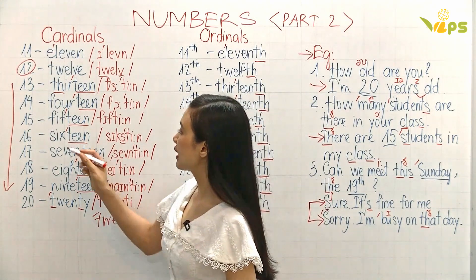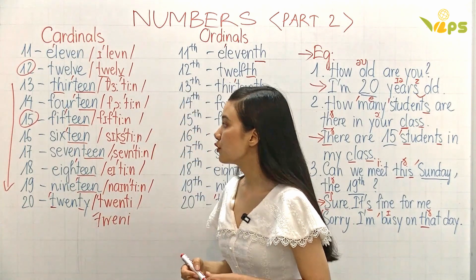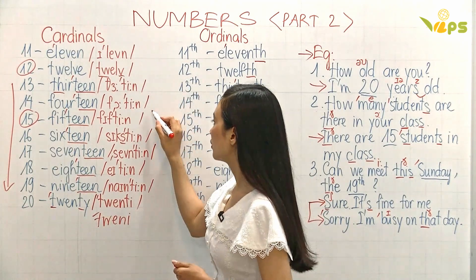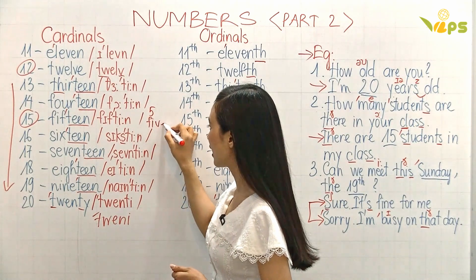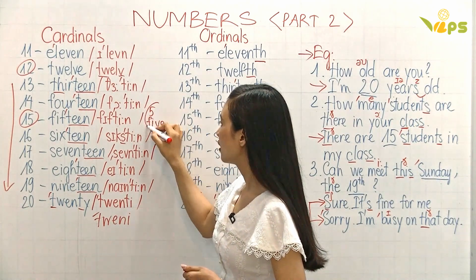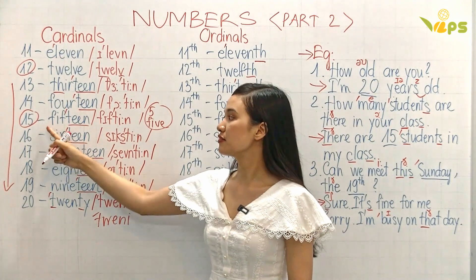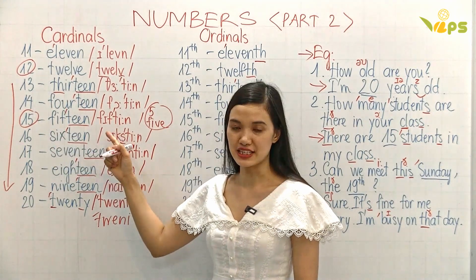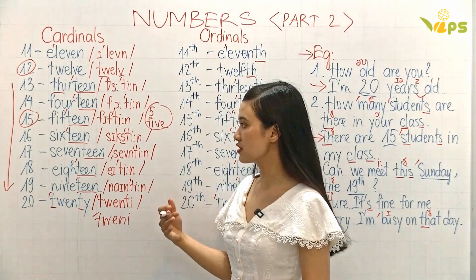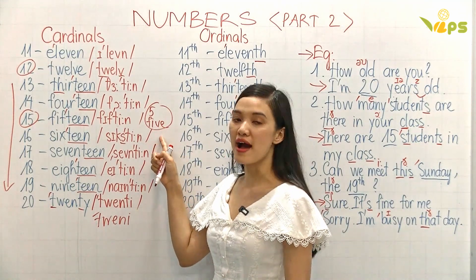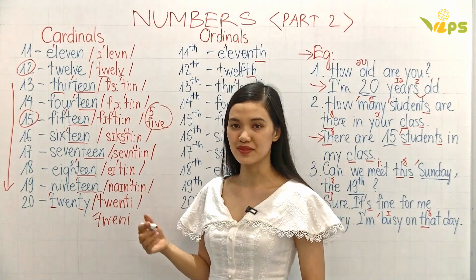Now look at number 15. Remember, we say 'five,' okay? This is 'five,' but 'fifteen.' Remember, that's the difference between them. So: five, fifteen, fifteen — okay?